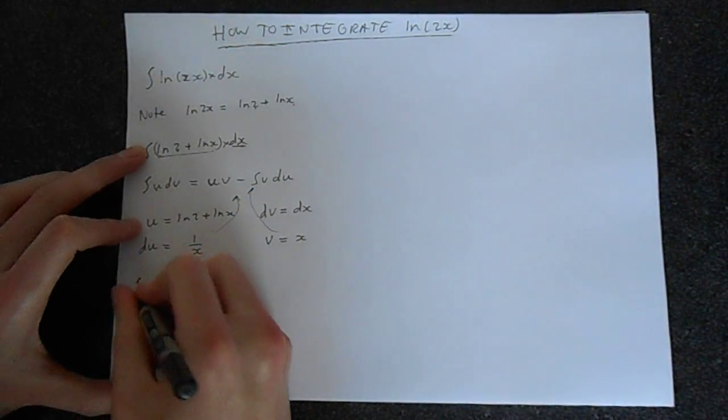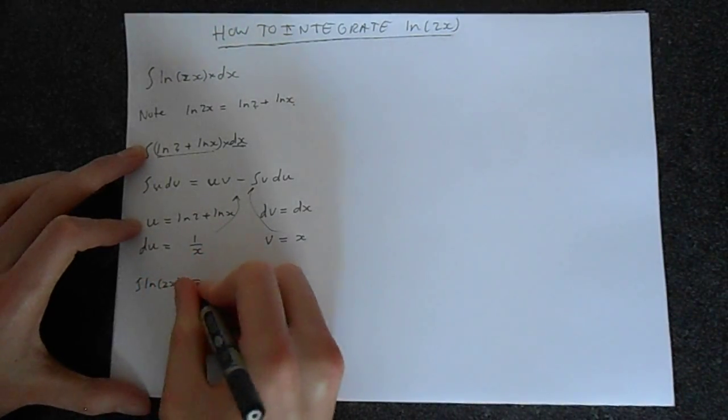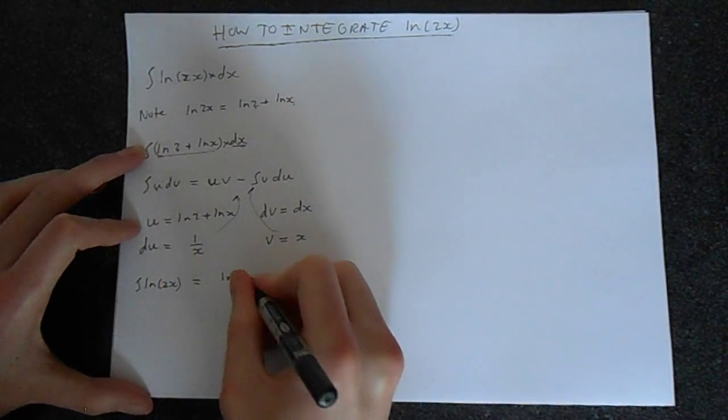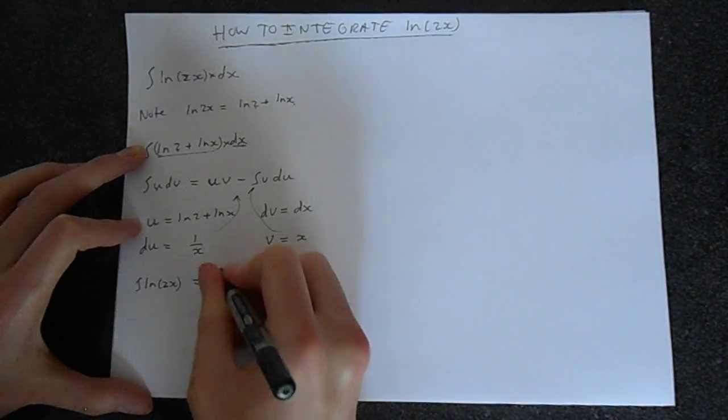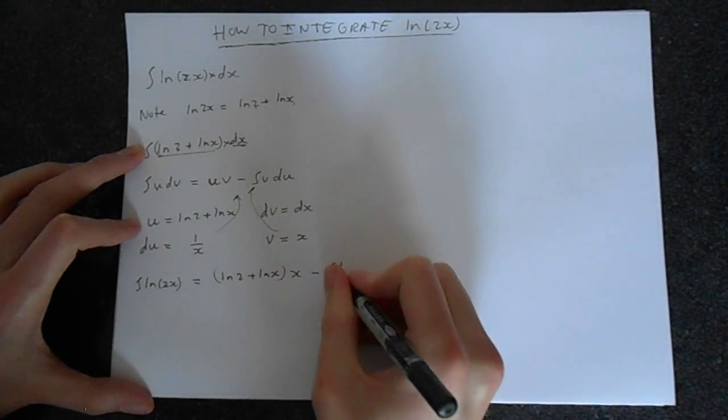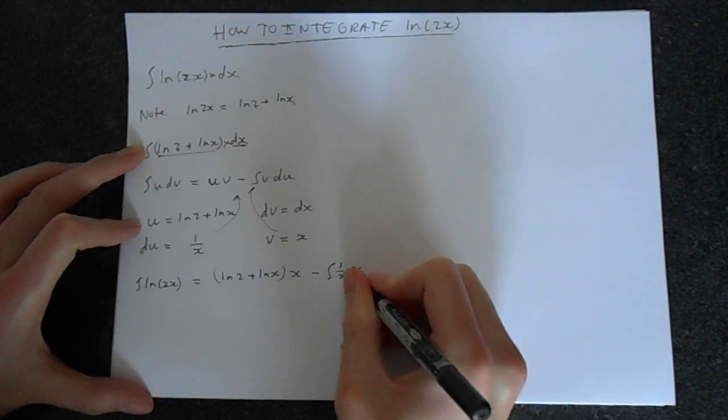So we get that the integral of ln2x is equal to ln2 plus lnx times x minus the integral of 1 over x times x.